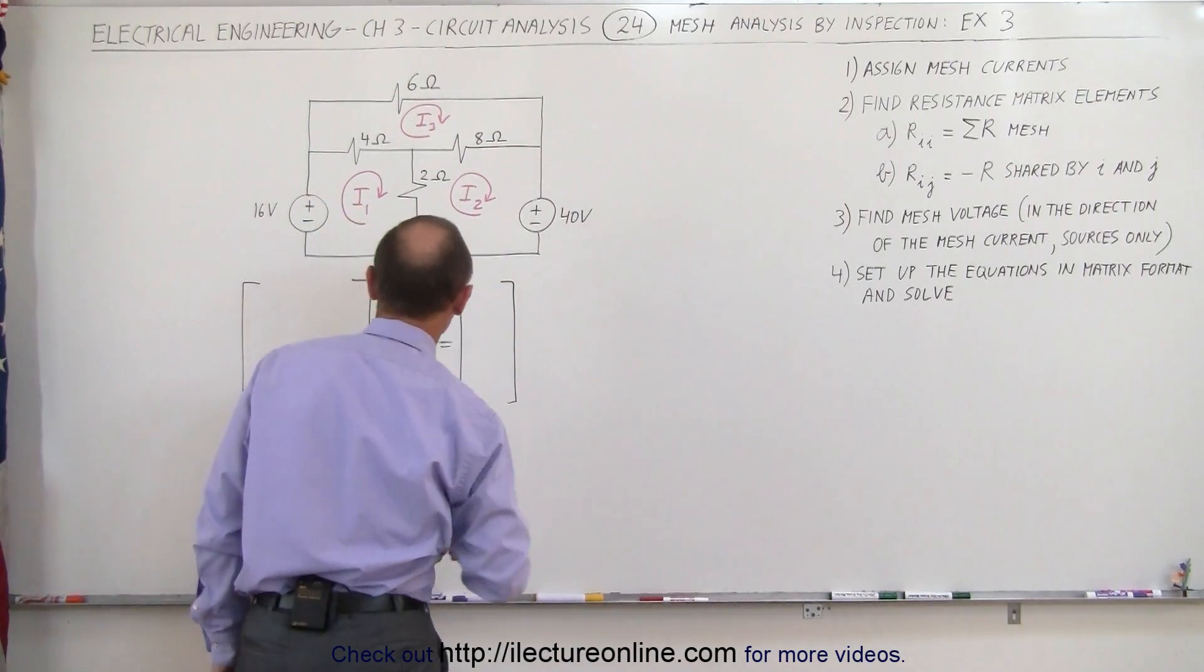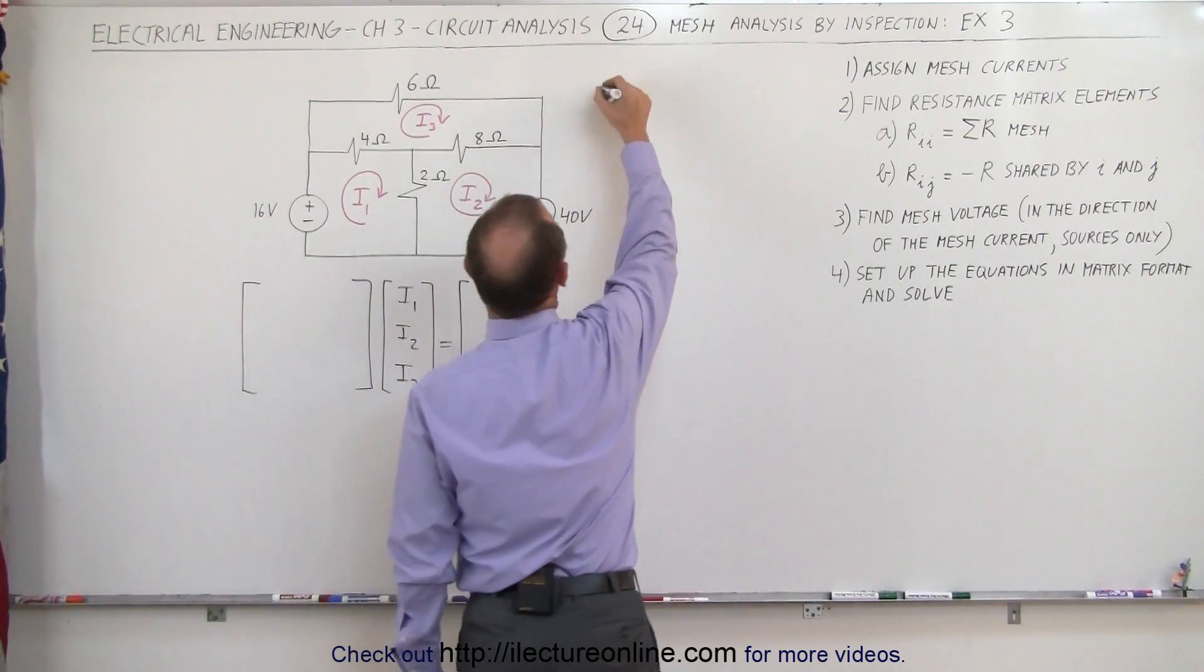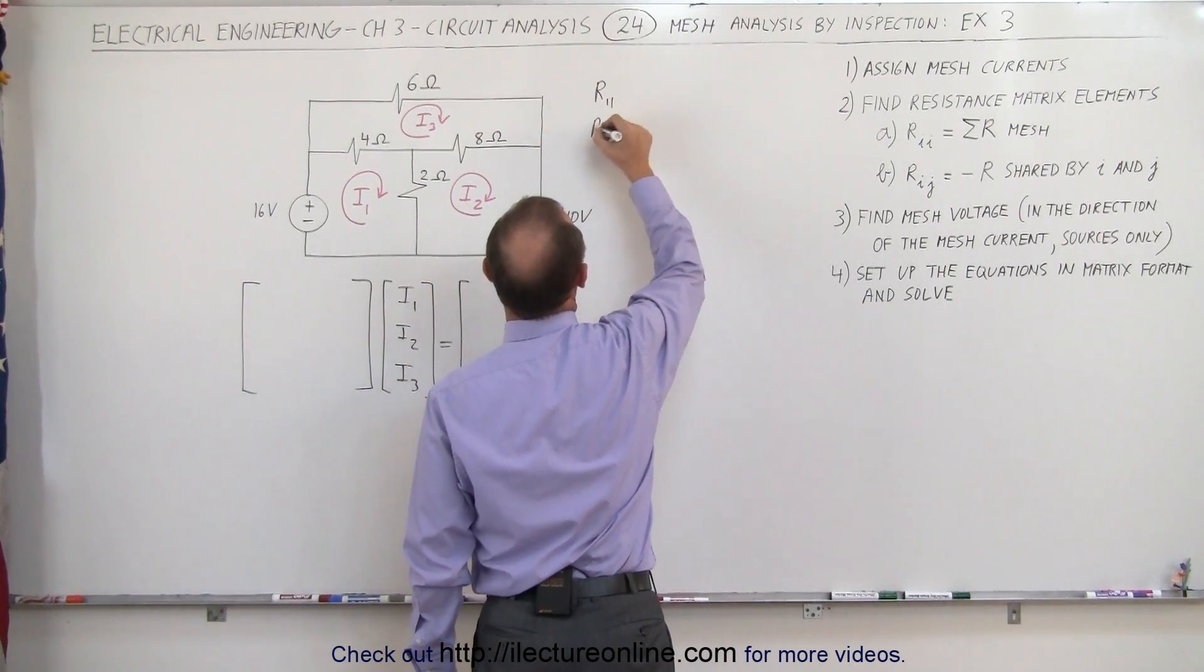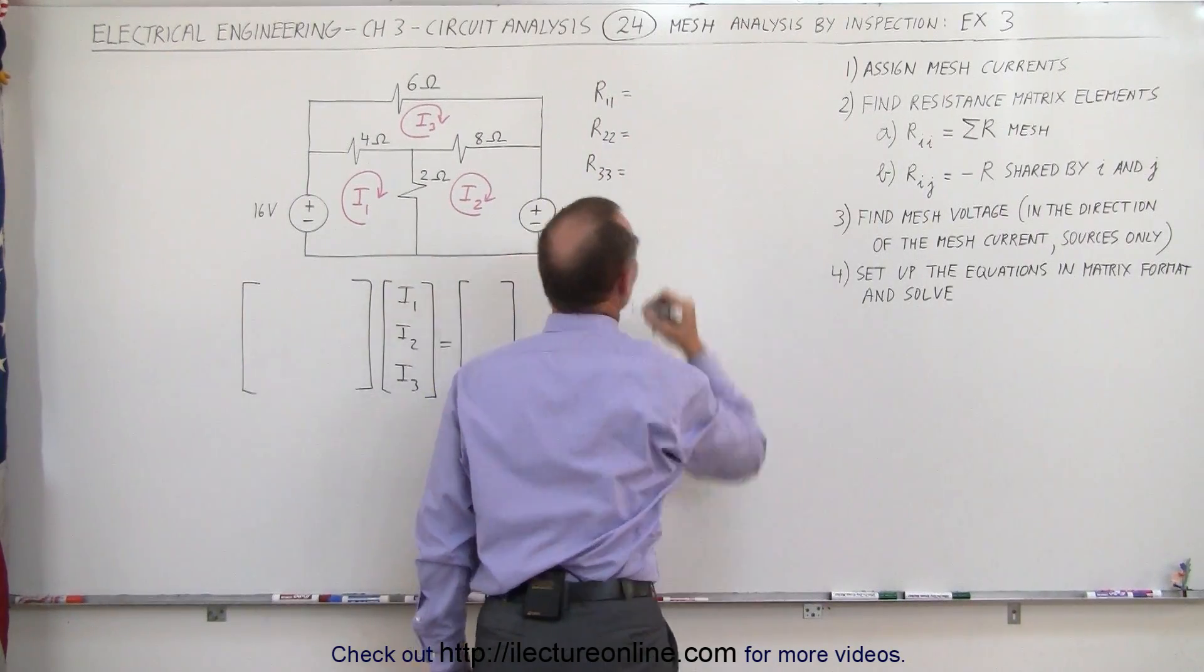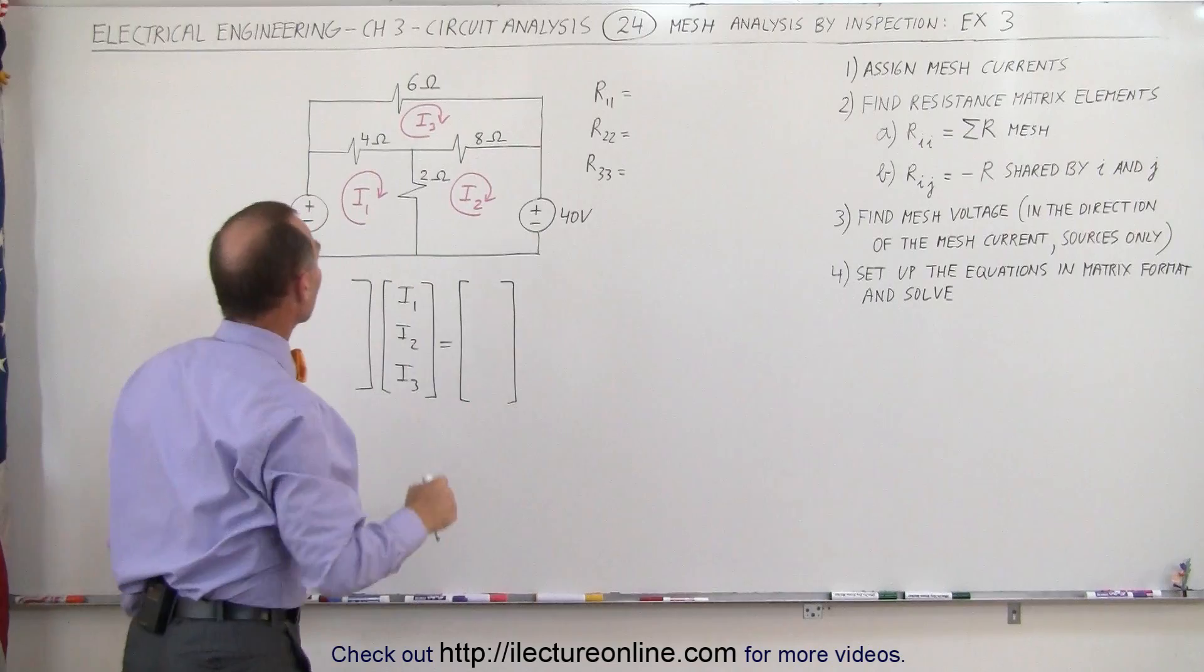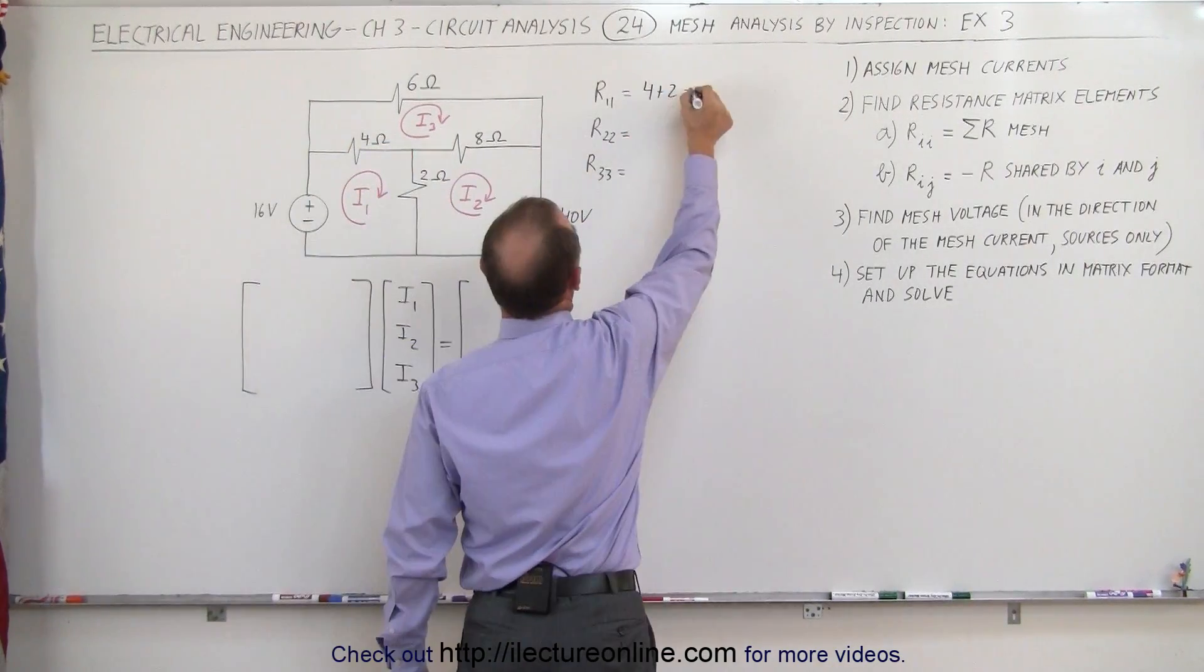And we'll find those in just a moment. First, we need to find the diagonal elements. That means we need to find R11, R22, and R33. This is simply the sum of all the resistances around each mesh. Going around the first one, we see 4 plus 2, which is equal to 6.